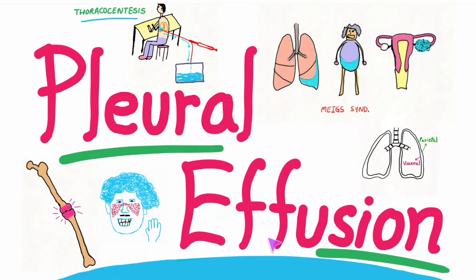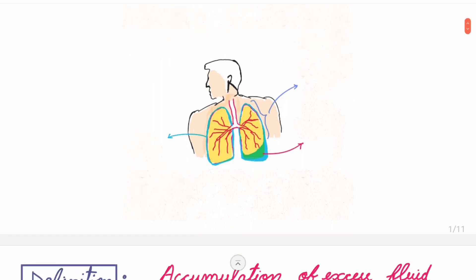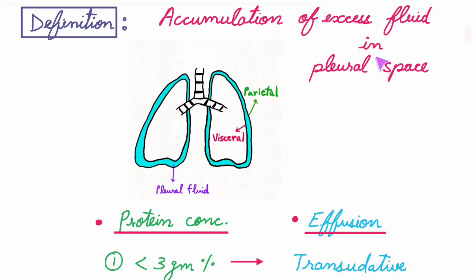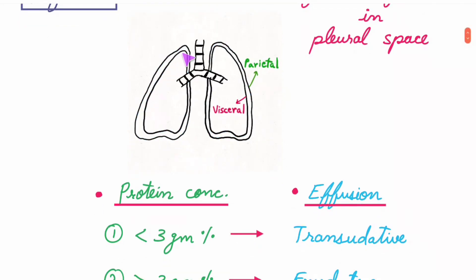Pleural effusion is the accumulation of excess fluid in the pleural space. The pleural space is the space that lies between the parietal layer (the outer layer) and the visceral layer (the inner layer). You can see this fluid accumulated.